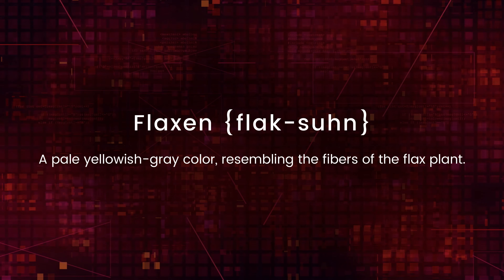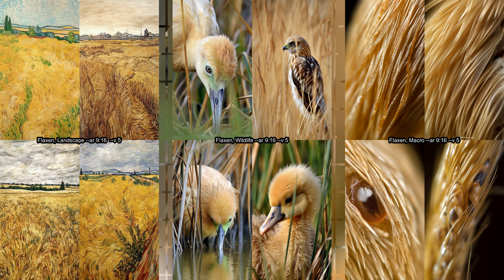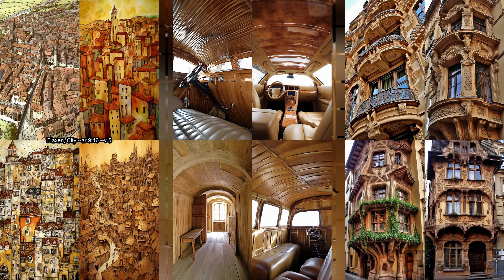Our next stop brings us to the world of flaxen, where the soft and delicate tones of this straw coloured hue bring warmth to any space. This word brings in some figurines and some hair — I guess the expression flaxen hair goes together quite often. The landscapes get a different look based on this, looks painted, but unfortunately I am not an art expert to tell what kind of ism this is. Animals are cute birds — love the duck. City images also get a really nice whimsical look to them, all are in different styles again. Interiors get the colour right but look kind of weird — I have no idea what they are the interiors of. Boats perhaps?